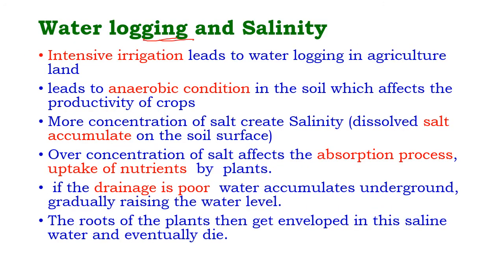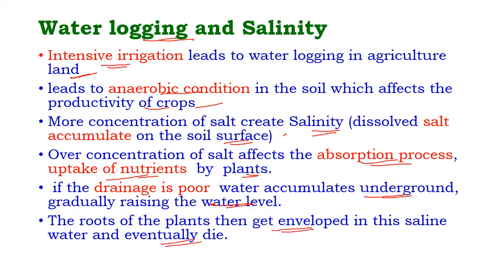Water logging and salinity: intensive irrigation leads to water logging in agricultural land, which causes anaerobic conditions in the soil, affecting crop productivity. More concentration of salt creates salinity — a condition in which dissolved salt accumulates on the soil surface, affecting the absorption and uptake of nutrients by plants. If the drainage system is poor, water accumulates underground, gradually raising the water level so that plant roots become enveloped in saline water and eventually die.